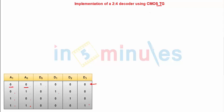Here on the screen you can see the truth table of a 2-to-4 decoder, which says that when my a1 is 0 and a0 is 0, my d0 is 1 whereas all other outputs are zeros.